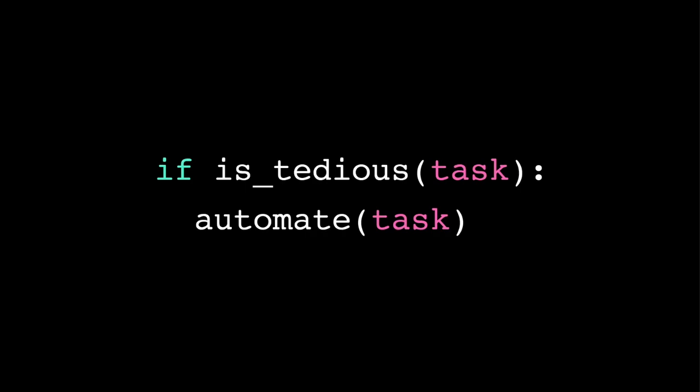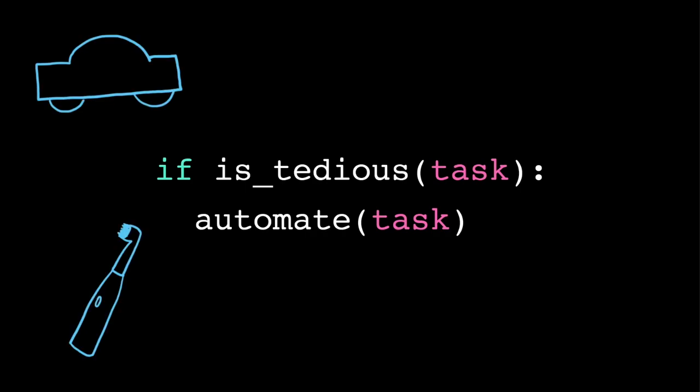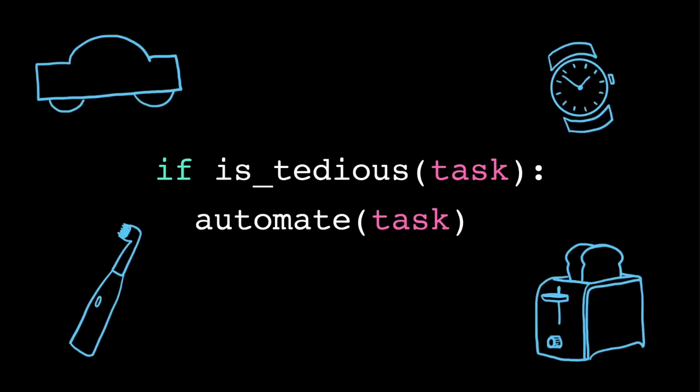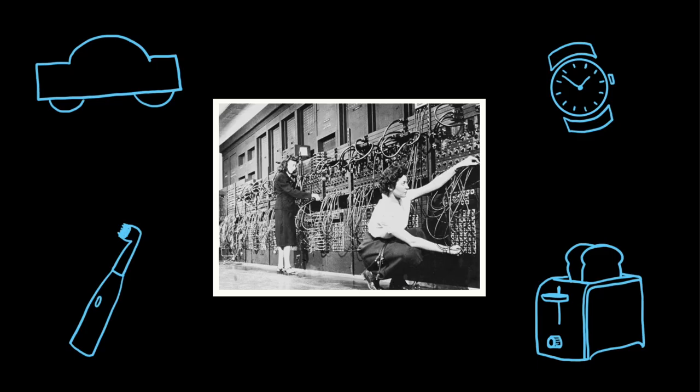How can programs make our lives easier? While technology exists in almost everything nowadays, the first computers were built to automate complex, repetitive, and time-consuming calculations.